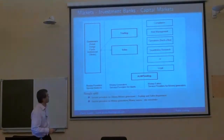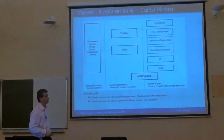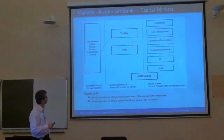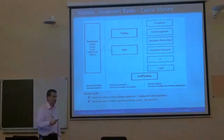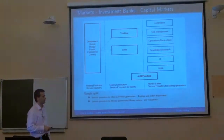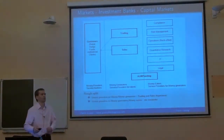I'll jump directly to capital markets, which is part of the investment bank. I split it into three rows: external clients — retail, hedge funds, institutional clients — these are the money providers or service seekers. Then you have trading and sales. Usually all interaction goes through sales — the first point of contact is the sales guy, who has to know everything about the client. Based on MIFID, the trader should not actually know who the client is.